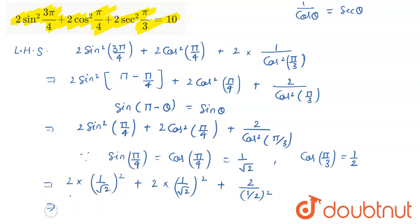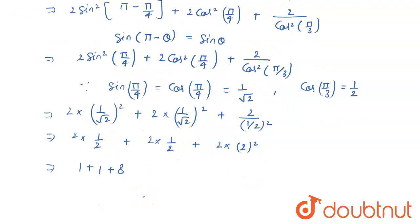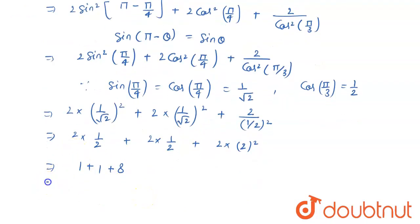So it becomes 2 × 1/2, plus 2 × 1/2, plus 2 × 2 squared, that is 4. So, it is 1 + 1, plus 4 × 2 = 8. I have finally deduced it, and it is 8.